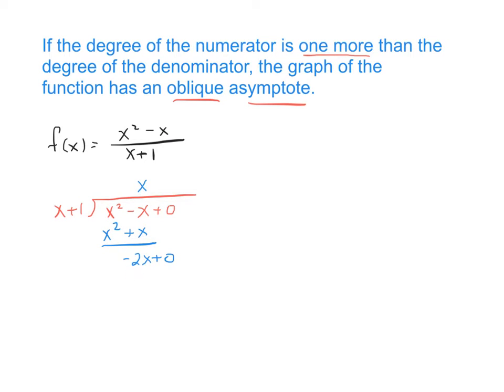Then negative 2x divided by x is negative 2. We multiply and we get a remainder of 2.